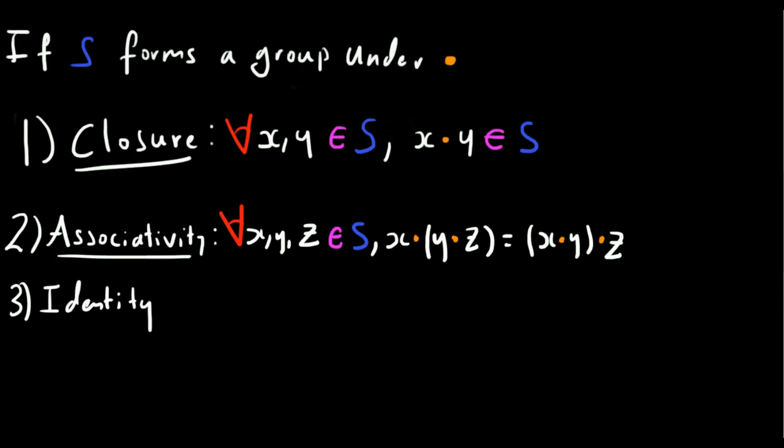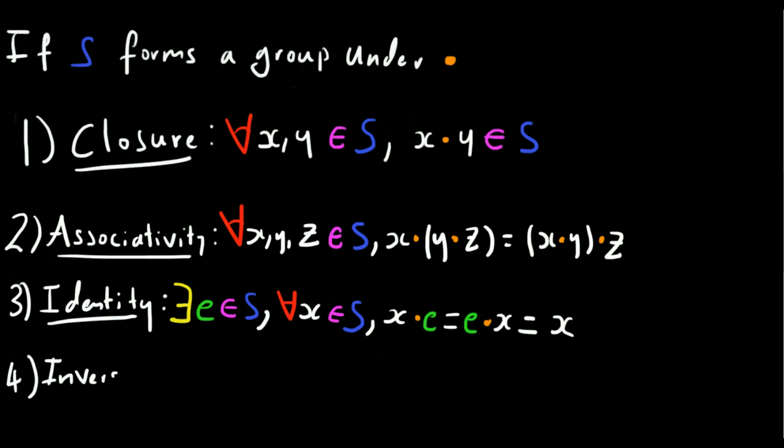The third axiom concerns what's known as an identity element. It states that there exists some element, usually denoted E, such that for any element X in the set, X.E is equal to E.X, which is just equal to X. In short, there must exist an element that leaves any other element in the set unchanged. It's worth noting that we only need to be able to prove that the identity element exists. We don't in theory need to know specifically what it is, although 90% of the time we do.